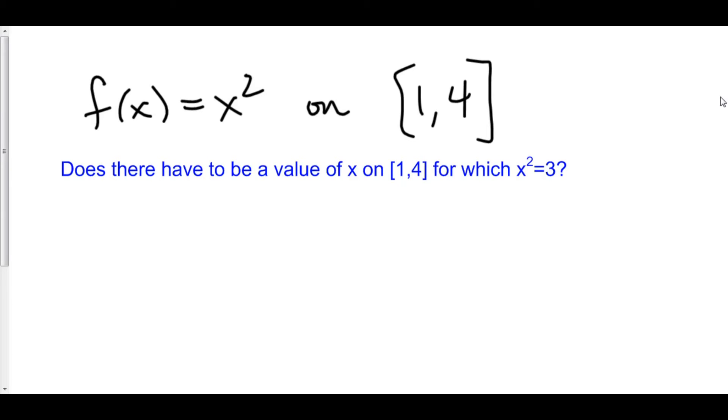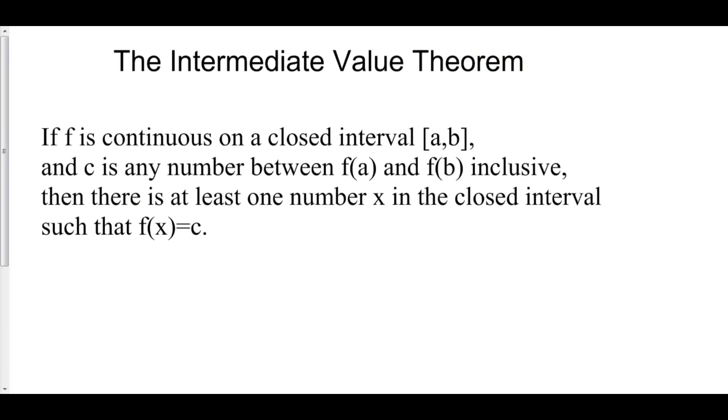Therefore, we are allowed to use the intermediate value theorem. The reason for this is that in order to be able to invoke the intermediate value theorem, f must be continuous on the closed interval from a to b. So whenever using IVT, this is the first thing that must be stated.